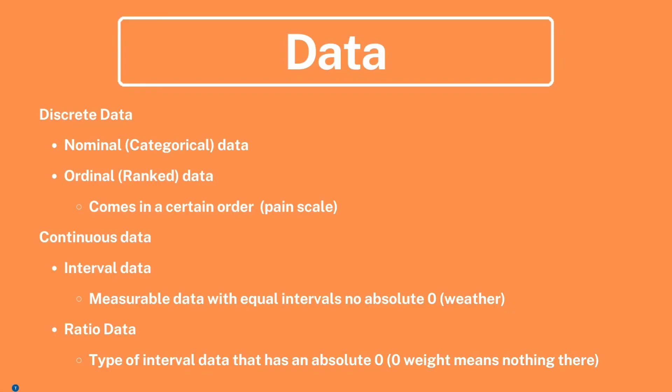Next we'll be reviewing data. Discrete data comes in whole numbers; an example of this is people - you can't have half a person, you can just have one person. Continuous data comes in decimals and allows for an infinite number of possibilities.